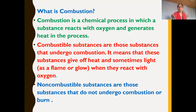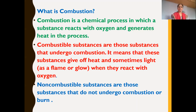We have learned what is combustion — combustion is a chemical process in which a substance reacts with oxygen and heat is produced. Sometimes heat as well as light is produced in this process. Combustible substances are those substances that undergo combustion, giving off heat and sometimes light in the form of a flame or just a glow when they react with oxygen.